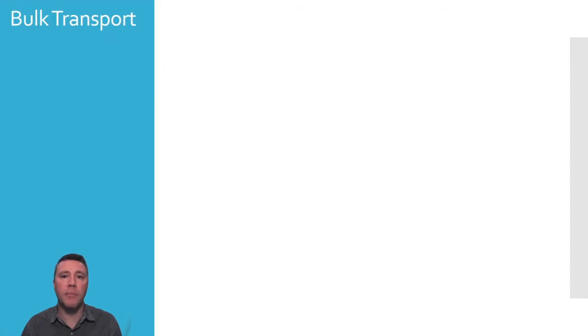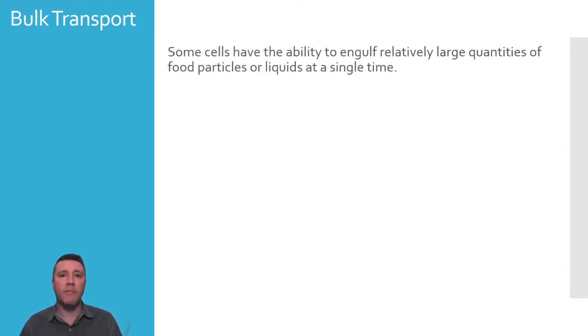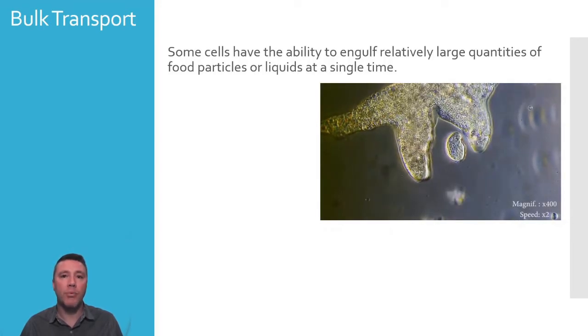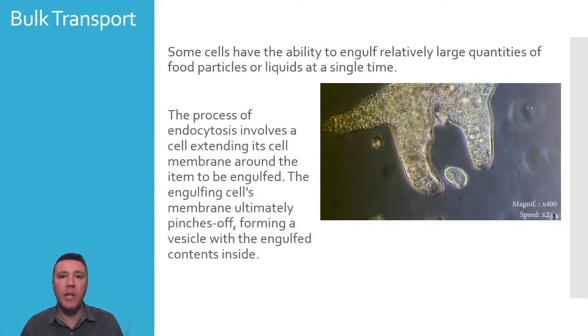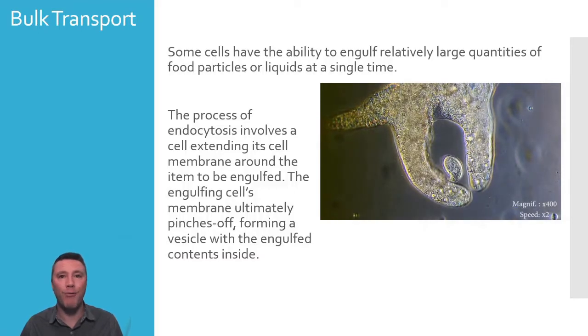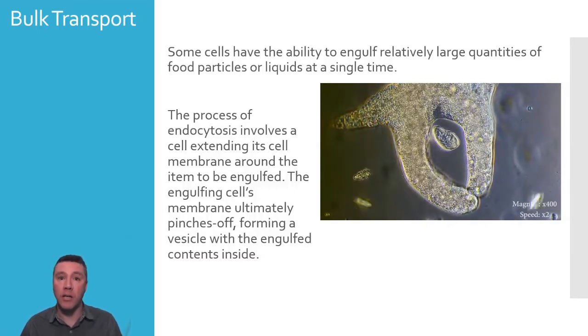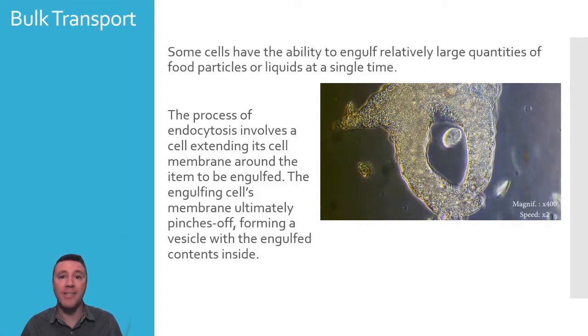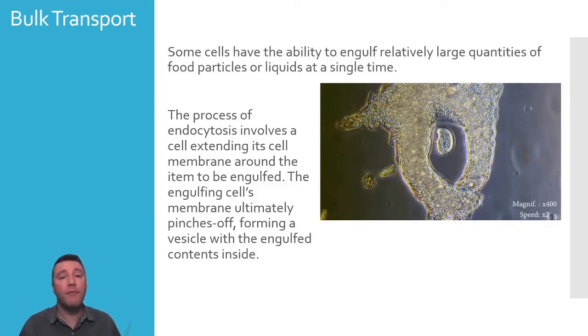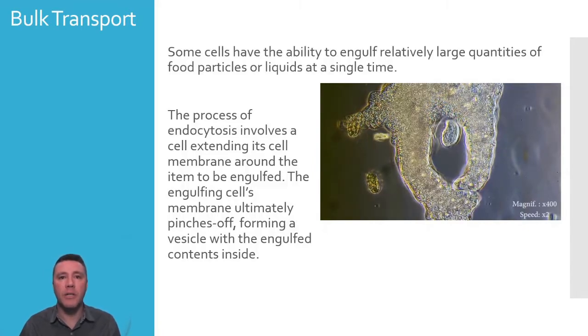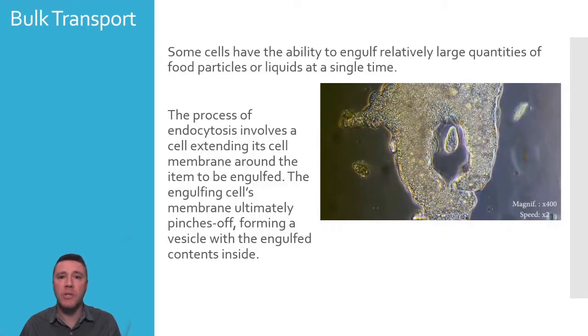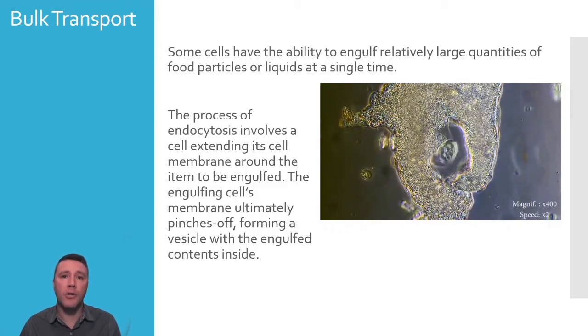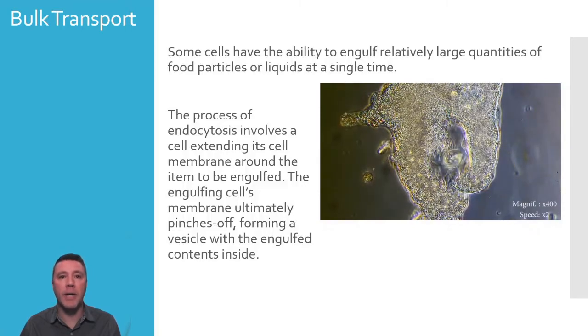So far, we've seen examples of transport involving ions, water molecules, and other small molecules like glucose. But some cells have the ability to engulf or expel relatively large volumes of substances all at once. This process of endocytosis is one in which a cell extends its membrane around an item that it intends to engulf. As the cell membrane does so, the engulfed item is surrounded and trapped in the membrane that is eventually pinched off, forming a vesicle that is now inside the cell. This process is common feeding behavior in single-celled organisms and is also important as specialized immune system cells that travel around the body are charged with engulfing and destroying foreign invaders like bacteria and viruses.